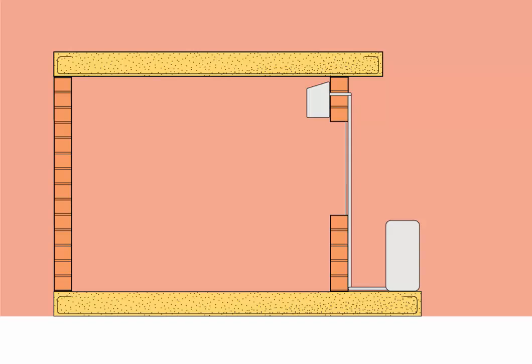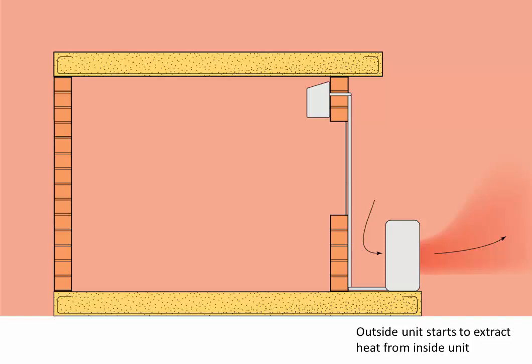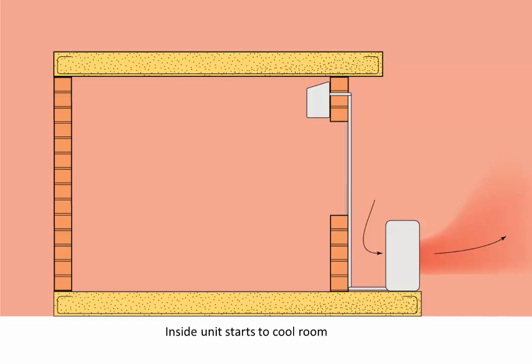We switch on the power, and the indoor unit starts to be cooled by the outdoor unit, pumping heat to the outside air. When it is ready, the indoor unit sends out cool air into the room. The airstream moves fast enough to mix up all the air in the room. Gradually the room cools, and after an hour or so, starts to feel comfortable.